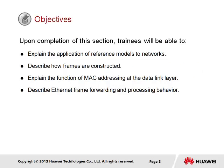Upon completion of this section, it is expected that trainees will be able to explain the application of reference models to networks, describe how frames are constructed, explain the function of MAC addressing at the data link layer, and describe Ethernet frame forwarding and processing behavior.